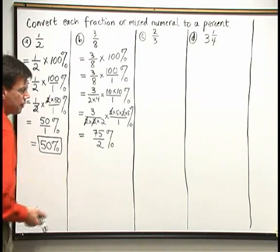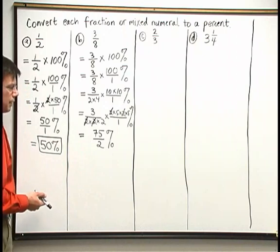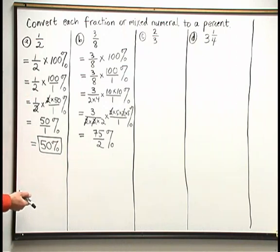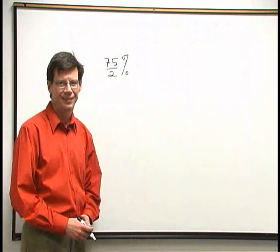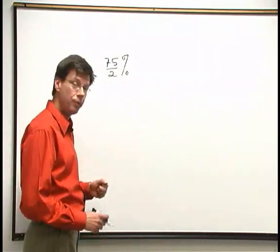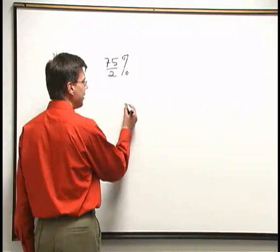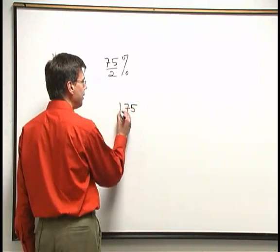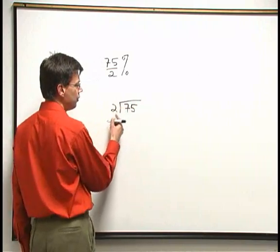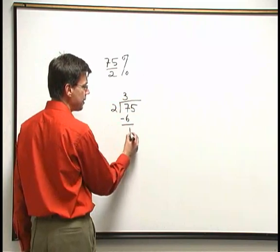The number on top is larger. I have an improper fraction there. We can divide that out and convert to a mixed numeral. Let's go ahead and do that off on the side. So let's take a look at 75 halves percent. We want to convert that to a mixed numeral. I'm going to take 75 and divide by 2. 2 goes into 7 3 times. 3 times 2 is 6. 7 minus 6 is 1.